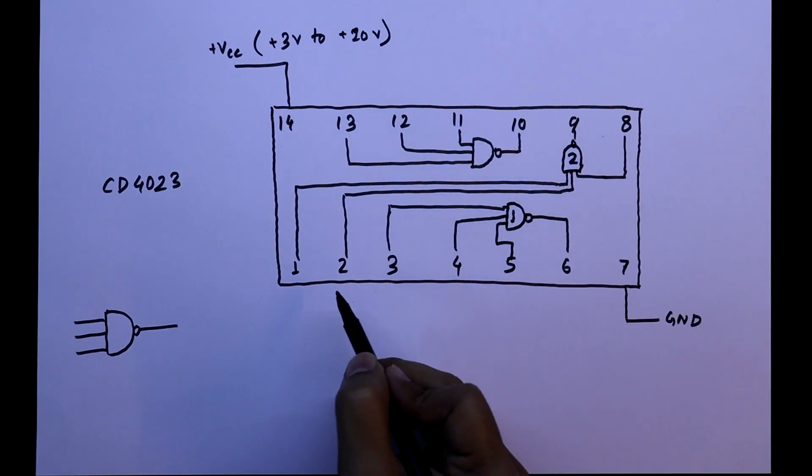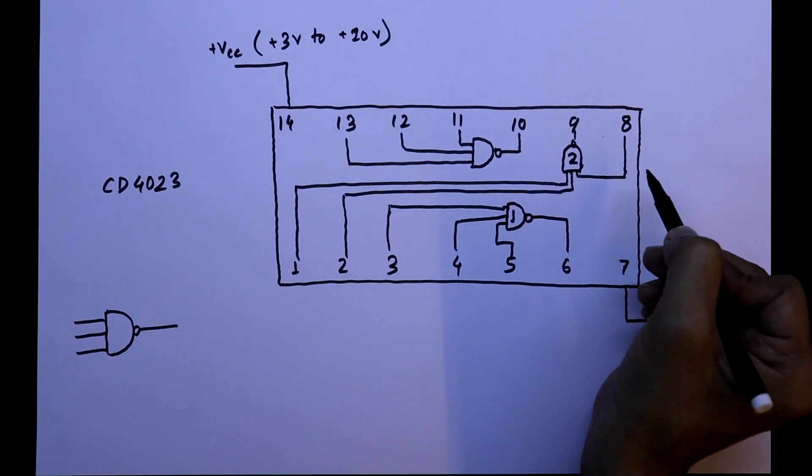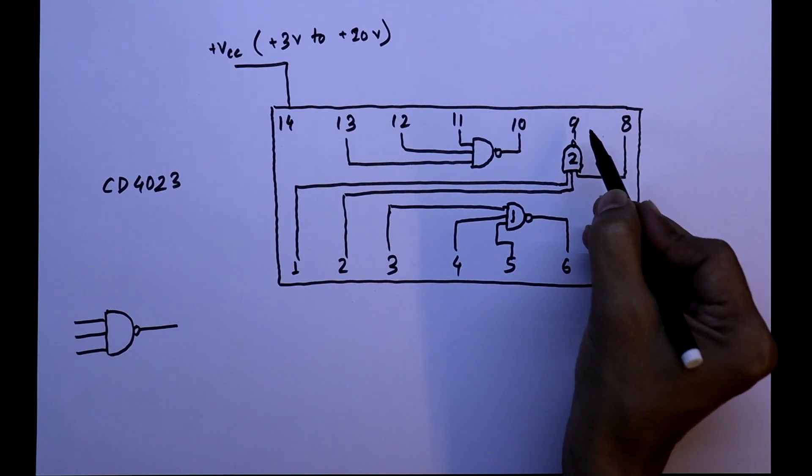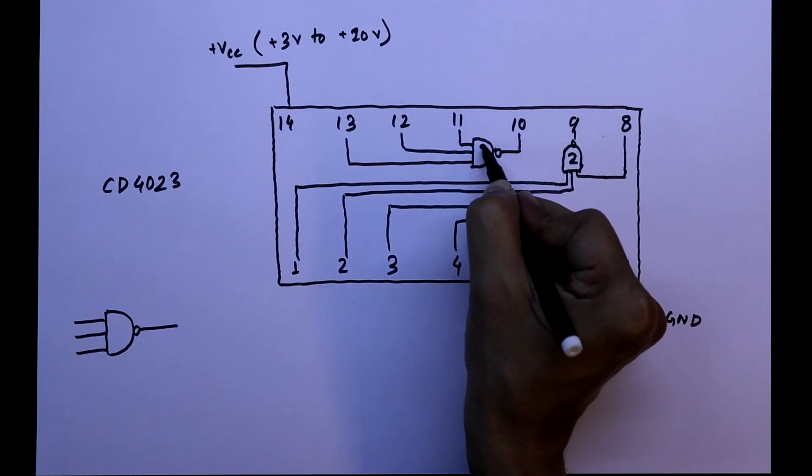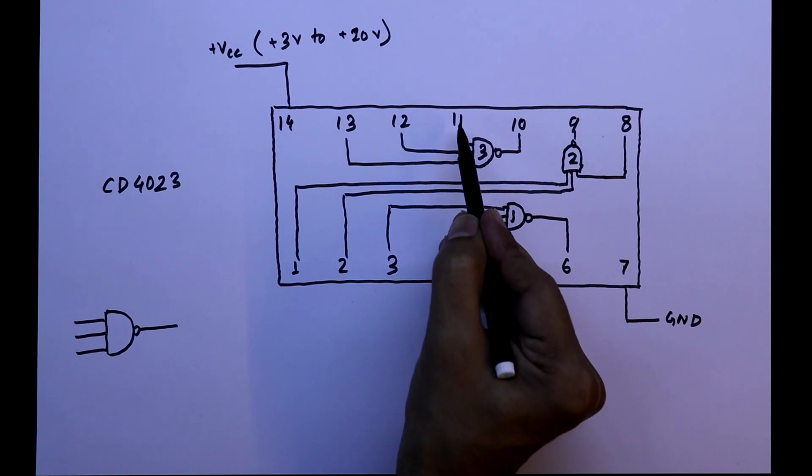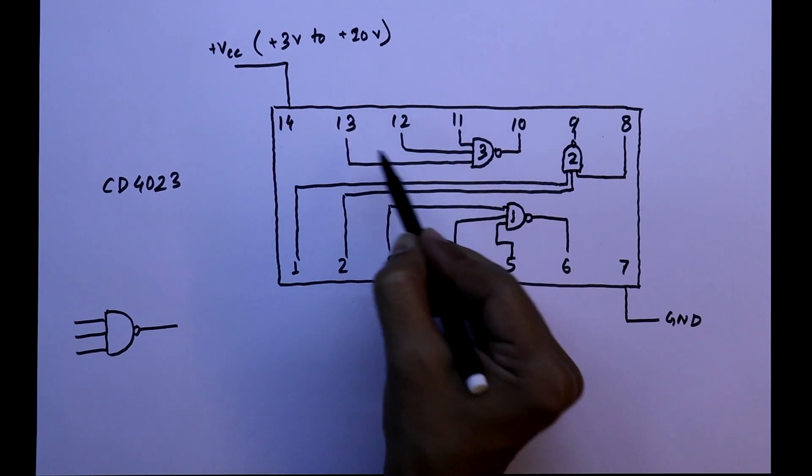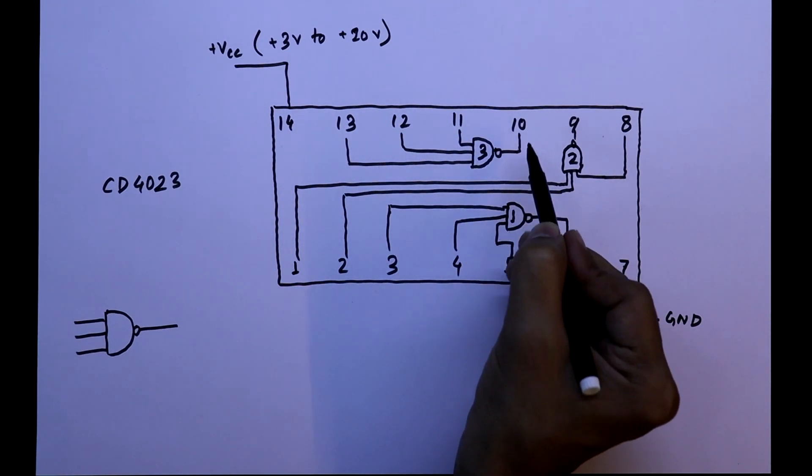For NAND gate 2, pin 1, 2 and 8 are input and pin 9 is output. For NAND gate 3, pin 11, 12 and 13 are the input and pin 10 is output.